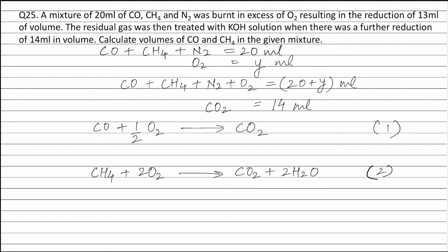Therefore, the total volume of carbon monoxide and CH4 before the reaction is equal to the total volume of carbon dioxide formed after the reaction, which is equal to 14 ml. Let the volume of carbon monoxide be X ml. Therefore, the volume of CH4 will be equal to 14 minus X ml.